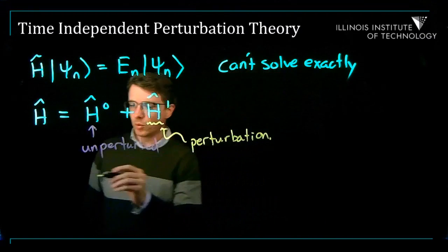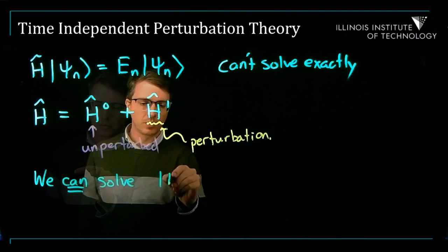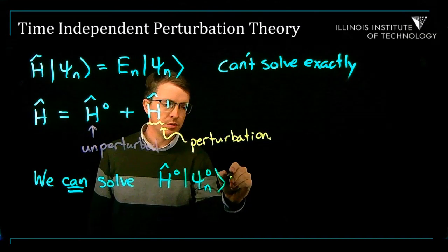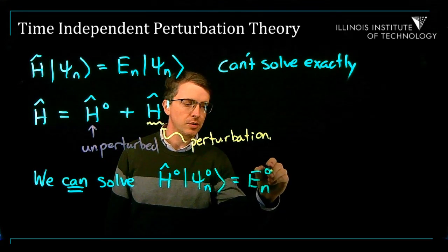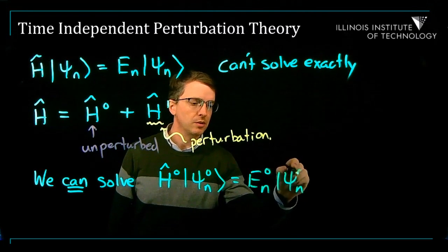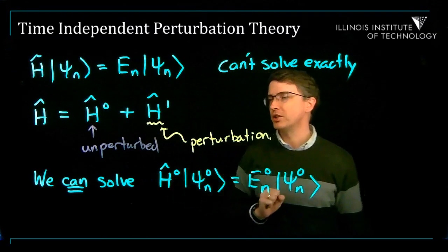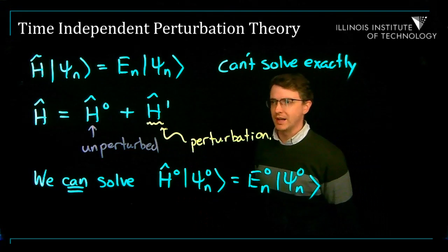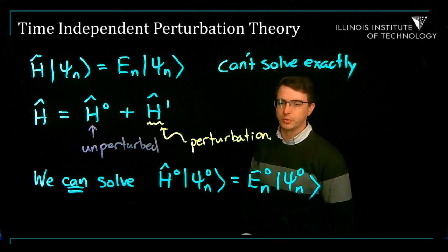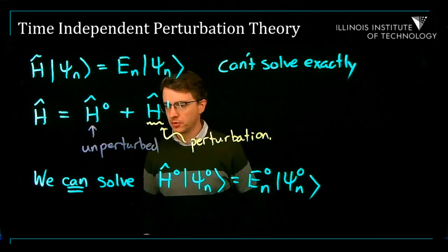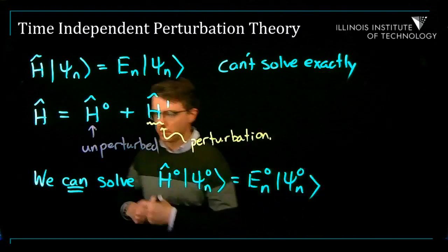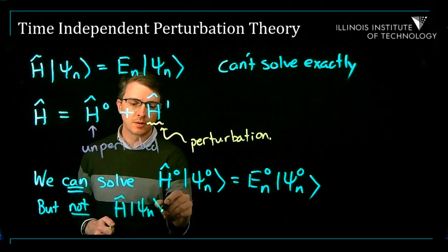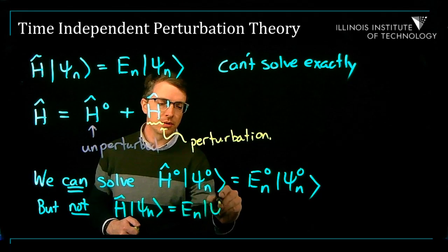We are assuming we know how to solve H0: H0 psi-n-0 equals E-n-0 psi-n-0. So if I just had H0 and didn't have H1, I would be able to solve it exactly. But then I've got this little modification H1, which is screwing everything up. We can solve H0, but not the full Hamiltonian H-hat psi-n equals E-n psi-n.